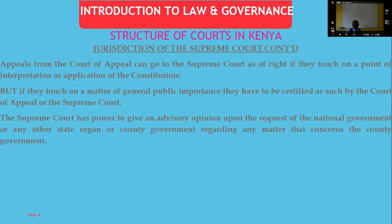The Supreme Court also has the power to give an advisory opinion upon the request of the national government or any state or county government. Parliament can petition the Supreme Court to give an advisory opinion on the nature of functions. For example, if the National Assembly and the Senate cannot agree on which is the upper house and which is the lower house, they would ask for an advisory opinion. Even county governments can raise an application for an advisory opinion to the Supreme Court.